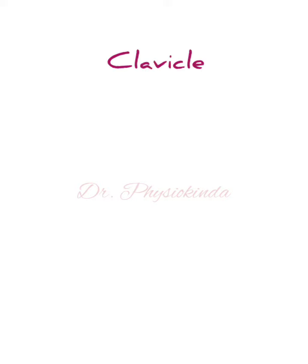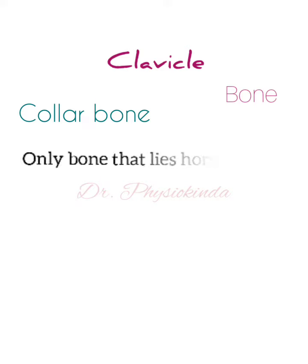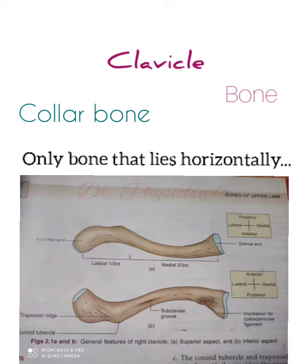Most commonly it is related to the clavicle. The clavicle is a bone also known as the collar bone. This clavicle has many peculiarities — one special characteristic is that it is the only bone that lies horizontally.